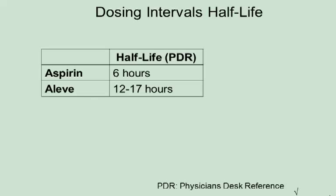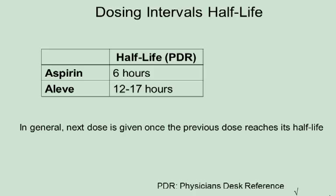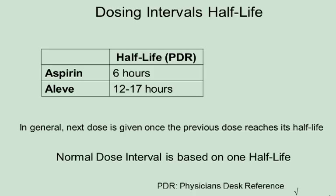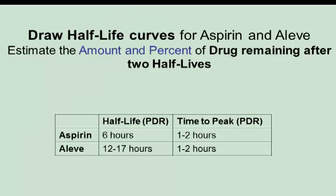Now we'll look at how dosing intervals relate to half-life. The reported half-lives for aspirin and Aleve are six hours and 12 to 17 hours. In general, the next dose of a drug is given once the previous dose reaches its half-life. The dosing intervals for aspirin and Aleve are related to their half-lives. Use 12 hours for the half-life of Aleve and one hour for time to peak for both drugs.